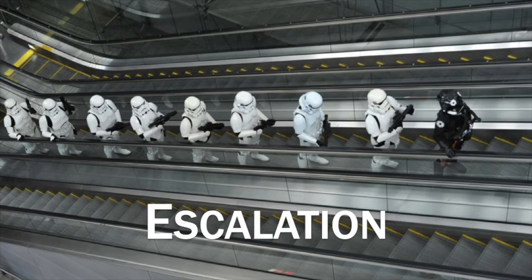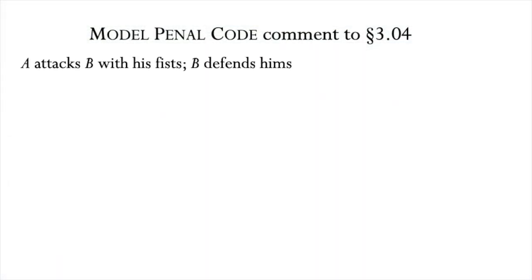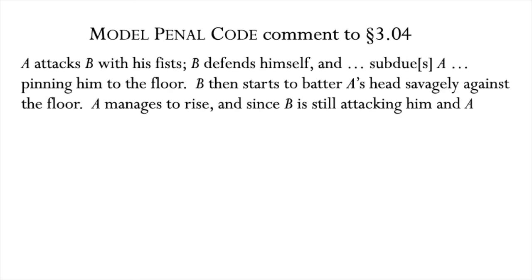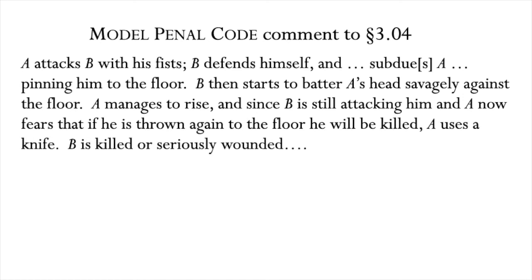The Model Penal Code notes this kind of situation. A attacks B with his fists. B defends himself and subdues A, pinning him to the floor. B then starts to batter A's head savagely against the floor. A manages to rise, and since B is still attacking him and A now fears that if he is thrown again to the floor he will be killed, A uses a knife. B is killed or seriously wounded. A's initial non-deadly attack makes A the provoker. The only way A can recover the right to defend himself is by withdrawing. But withdrawal is not an option here — A is under deadly attack by B. Under traditional doctrine, A is not entitled to use deadly force to repel B's deadly threat.